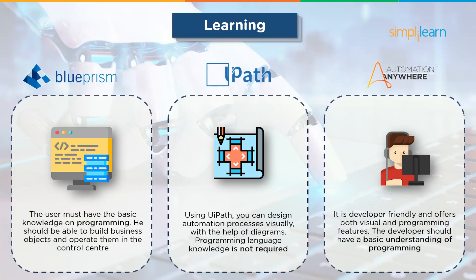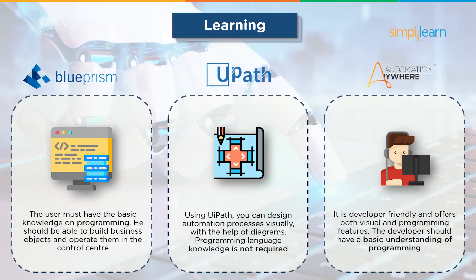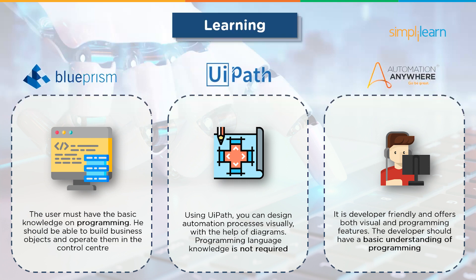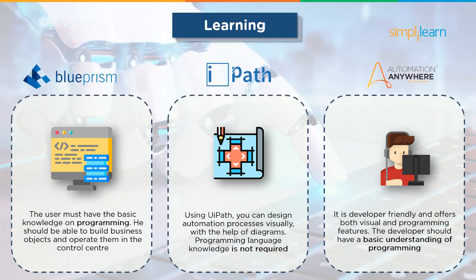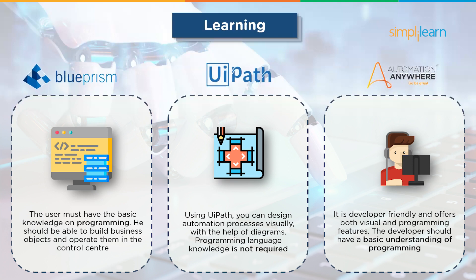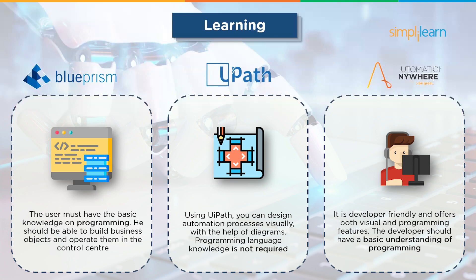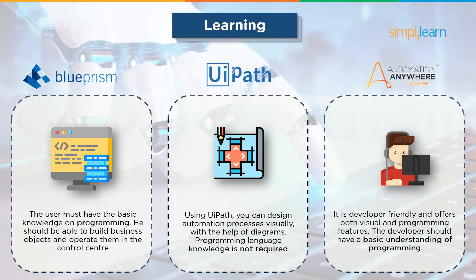Next up we have Learning. In case of Blue Prism, the user should have basic knowledge of programming and should be able to create business objects and manage them in the control center. UiPath enables you to design automation processes visually through diagrams, so the developer need not know a programming language. Automation Anywhere is developer friendly and offers both visual and programming features; the developer must have a basic understanding of programming.